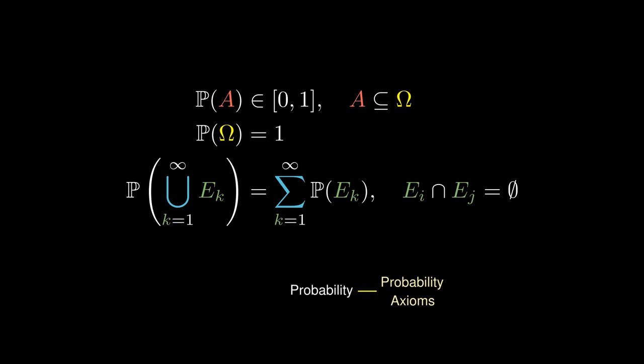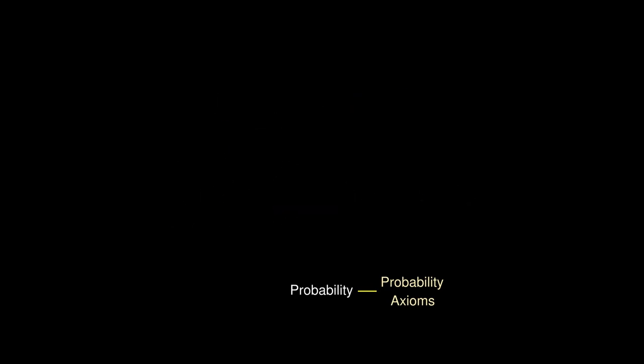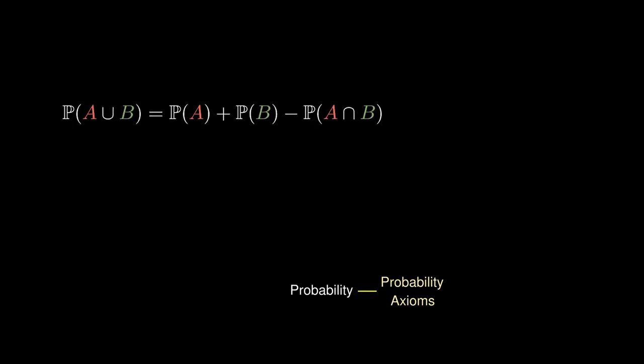This is known as countable additivity. To deal with the unions of two events that do overlap, we apply the inclusion-exclusion principle, which is upper bounded by the sum of the probabilities.